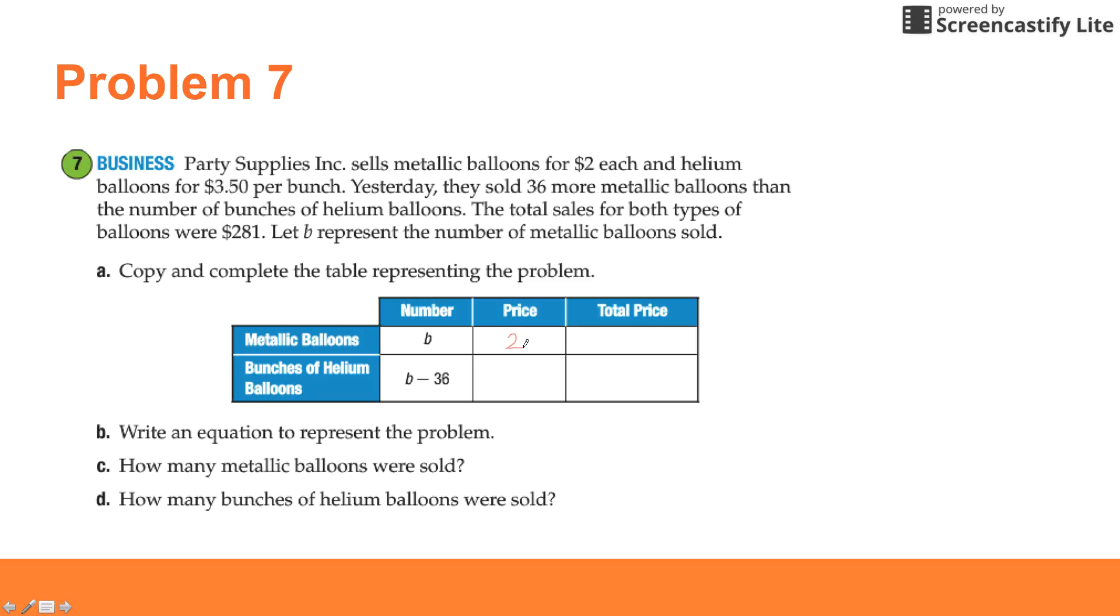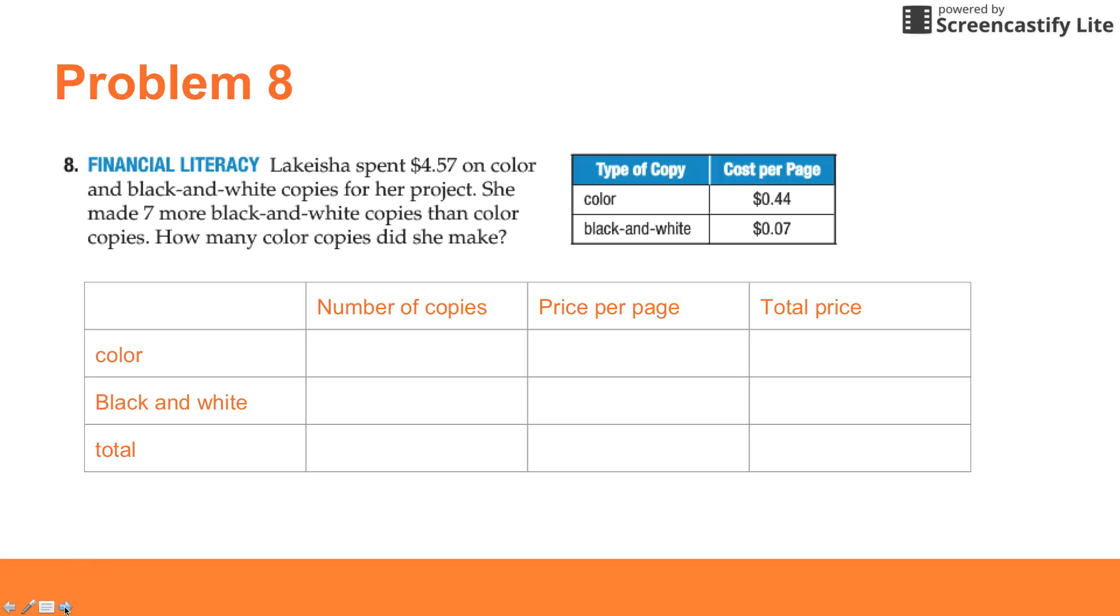Let's fill in our price now. Metallic balloons are $2 each, helium balloons are $3.50 per bunch. Then again, you're going to multiply the number of balloons times the price to equal the total price. I'm going to let you fill that in and see if you can answer the rest of the questions. The total sales for both types was $281, so try that one on your own and make sure you answer the rest of the questions.